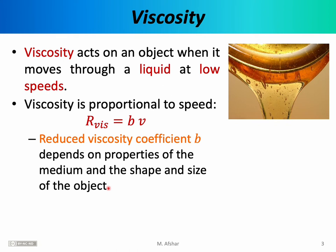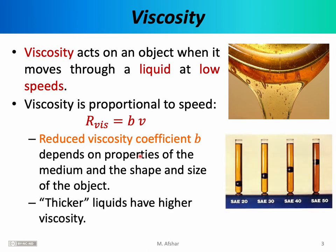In general, the bigger and blockier the object is, the larger its reduced viscosity coefficient will be. The properties of the medium also matter. Thicker liquids have higher viscosity. Moving through water is relatively easy, but moving through honey, molasses, or oil — these are thicker liquids — is more difficult.